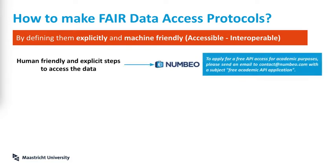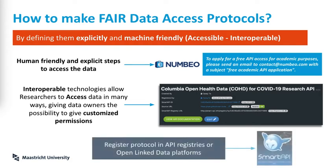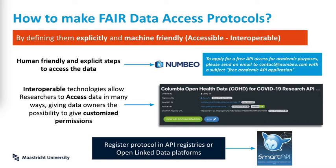You need human-friendly steps to access the data. For example, platform Numbeo explicitly tells you: if you want free access to the API, you need to contact them for a free academic API permission. Interoperable technologies allow researchers to access data in many ways so that the data owner can give customized permissions — like access to a particular table — and keep a log of everything, like in the Columbia Open Health Data for COVID. Ideally, we want to register these protocols in API registries or open linked data platforms to be discoverable, like Smart API Platform for FAIR APIs.